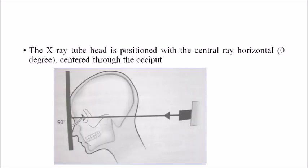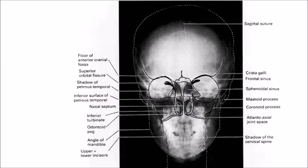In the PA view, the x-ray tube head is positioned such that the central horizontal ray is centered through the occiput. The main structures visible include the frontal cranial region, superior orbital fissure, inferior orbital fissure, and sinuses.